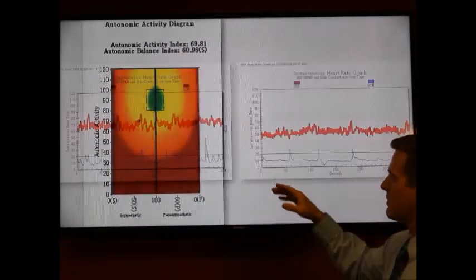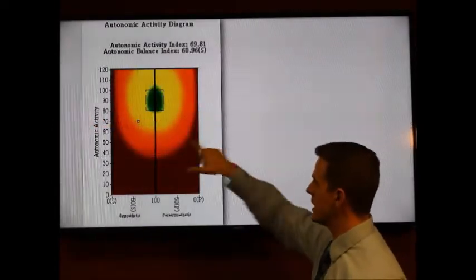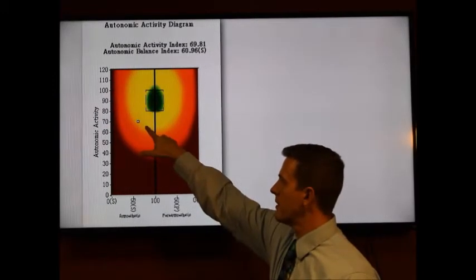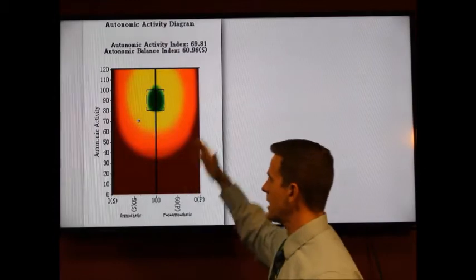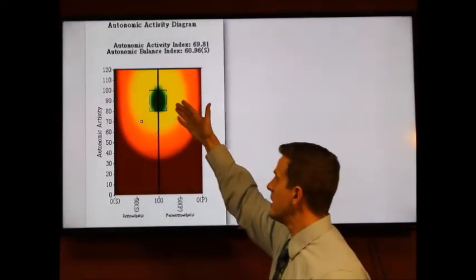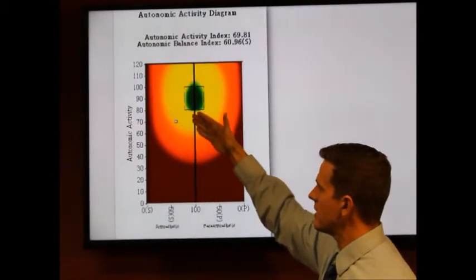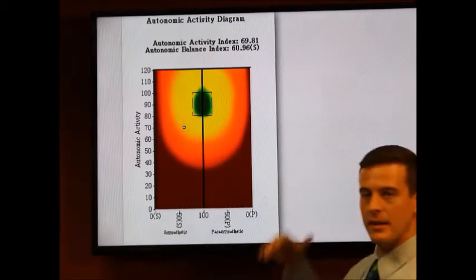The computer takes this data, there's an algorithm, it plugs it in, and it gives you a dot, a point you can see right there compared to everything else. There's a bullseye pattern here: the green is optimal, that's where you want to be. Yellow is okay or decent, orange is trending towards bad, red is bad.